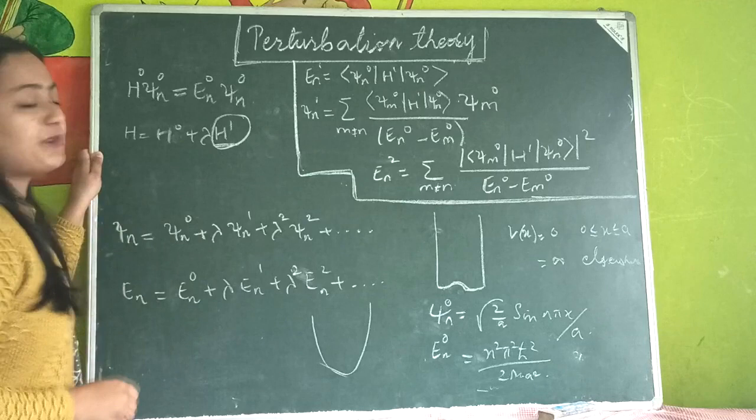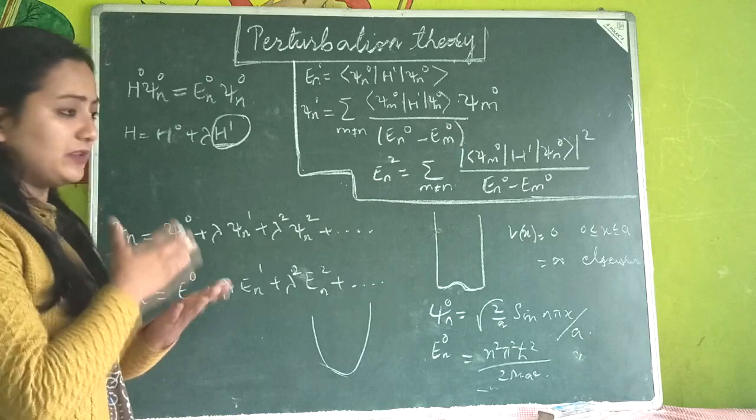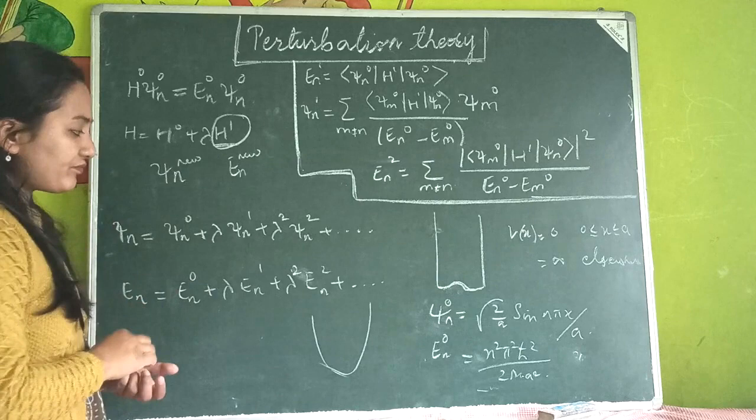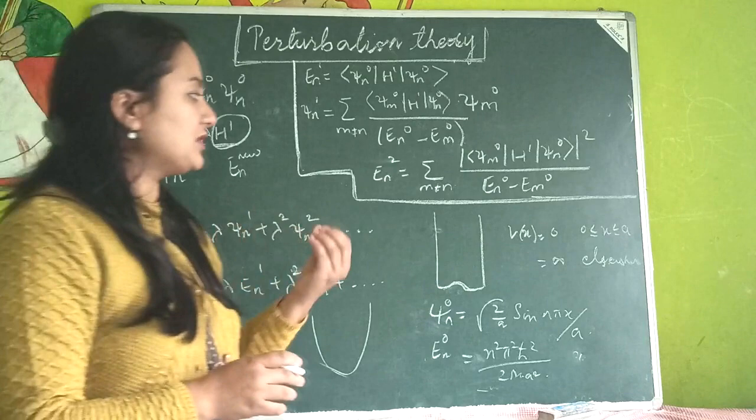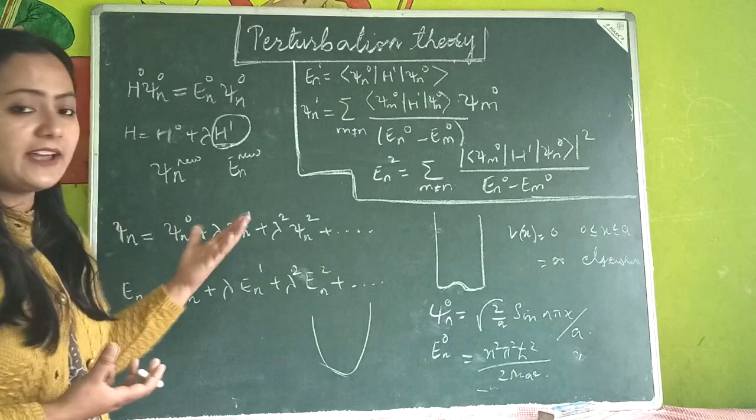After adding the perturbation to our new Hamiltonian, we try to extract the new ψ_n and E_n. The sole purpose of perturbation theory is: we have a perturbation part added to the Hamiltonian, denoted H', and then we try to find what are the new or modified energy eigenvalues and wave functions.